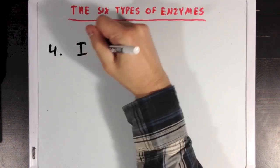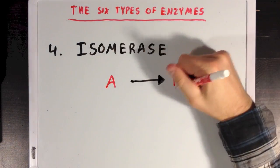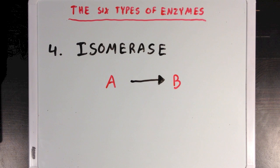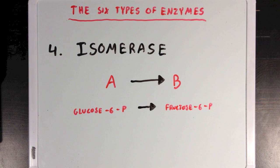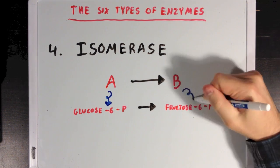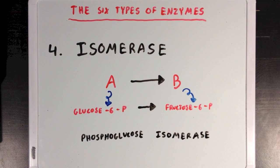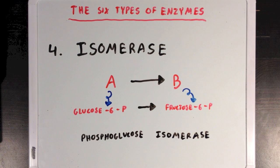Next we have the isomerase group. Enzymes in this group are typically involved in reactions where a molecule, like molecule A, is being converted to one of its isomers. An example is the conversion of glucose-6-phosphate to fructose-6-phosphate, which is one of the steps of glycolysis. This reaction is catalyzed by an enzyme called phosphoglucose isomerase, appropriately named since it creates isomers of phosphorylated glucose molecules.